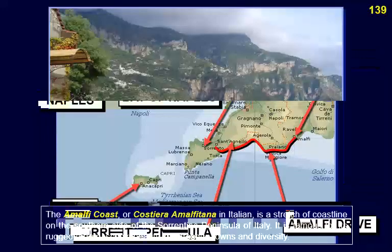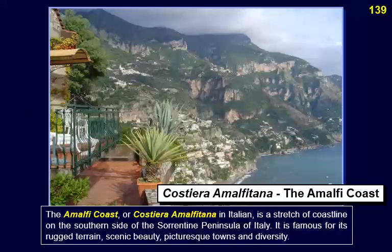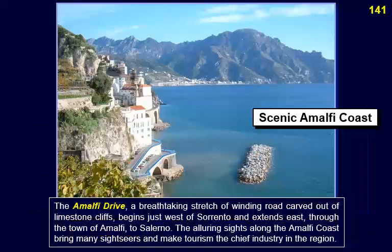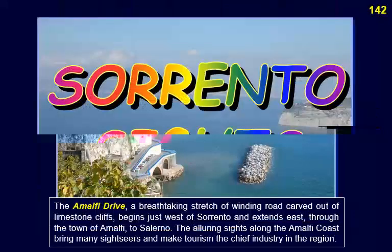The Amalfi Coast — Costiera Amalfitana in Italian — is a stretch of coastline on the southern side of the Sorrentine Peninsula, famous for its rugged terrain, scenic beauty, picturesque towns, and diversity. It is listed by UNESCO as a World Heritage Site. The Amalfi Drive, a breathtaking stretch of winding road carved out of limestone cliffs, begins just west of Sorrento and extends east through Amalfi to Salerno. Tourism is the chief industry in the region.